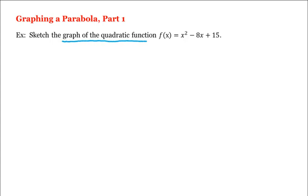Let's learn how to graph a parabola. For example, let's sketch the graph of this quadratic function here. The graph of a quadratic function is what we call a parabola, and an important point on a parabola is called the vertex. It is the point where the parabola turns around.